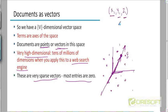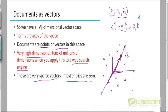So either you can think of a document as represented by the set of V-coordinates, or you can think of it as represented by the vector from the origin up to that point. That would be like the representation X1 i-cap plus Y1 j-cap plus Z1 k-cap in your high school vector algebra.